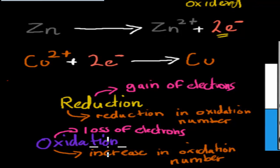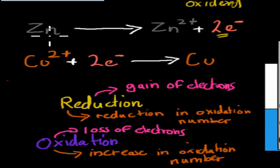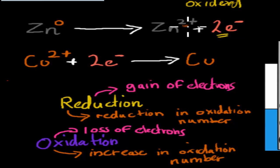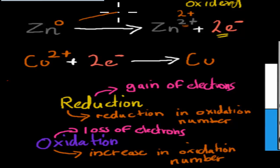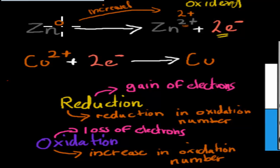The other way we can talk about oxidation is the increase in the oxidation number. If it's in its elemental stage, the oxidation number is zero. For an ion, the oxidation number is whatever the charge on it is — in this case 2+. So the oxidation number has gone from zero to 2+, meaning it has increased. Both ways tell us that zinc has been oxidized.